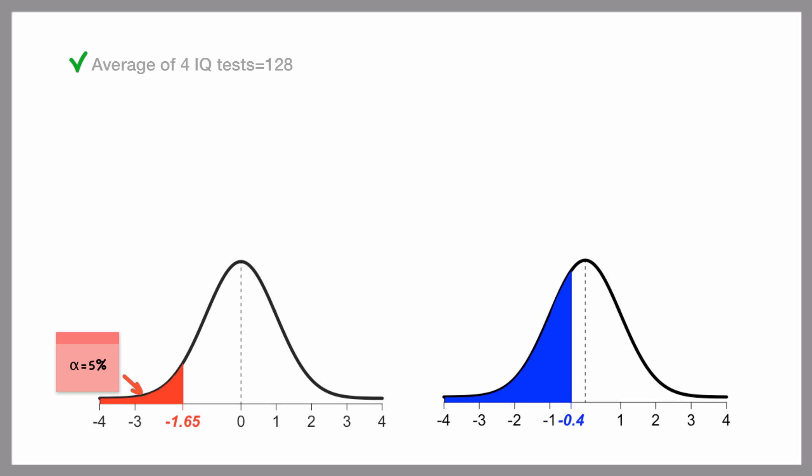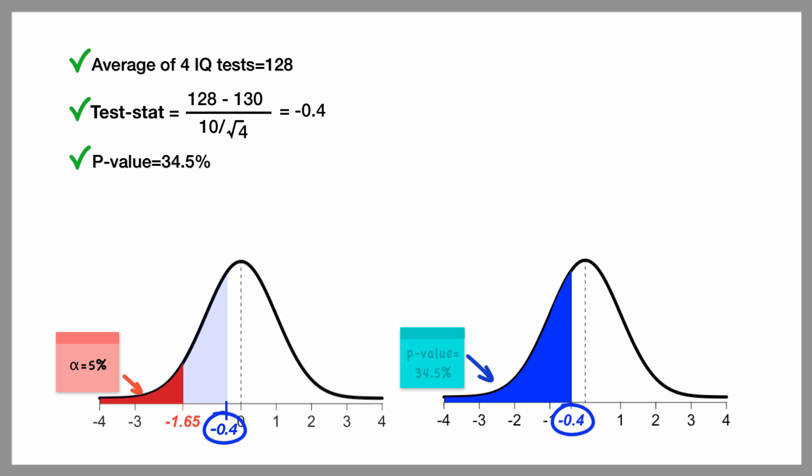Suppose, instead, that Kian's average over the four tests had been 128. We would end up with a test statistic of negative 0.4 and a corresponding p-value of about 34.5% if we use the normal distribution as an approximation.